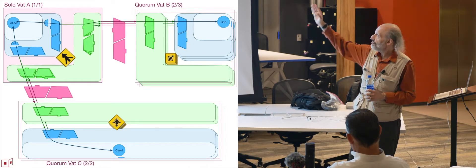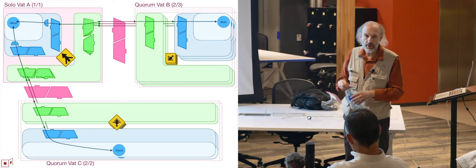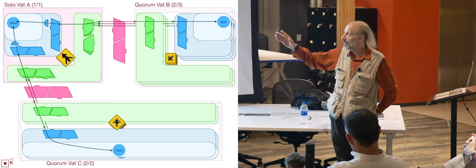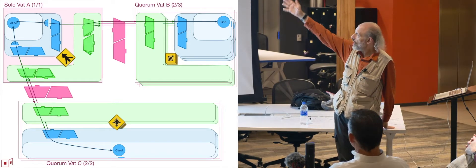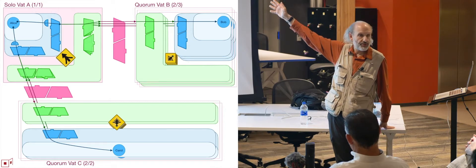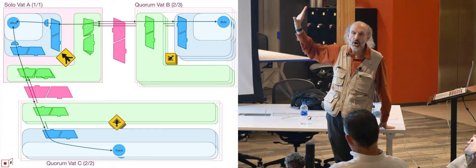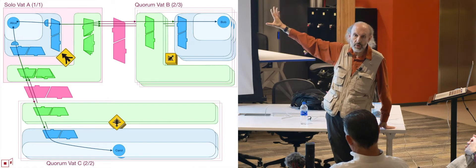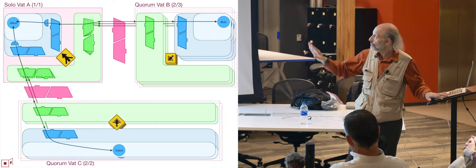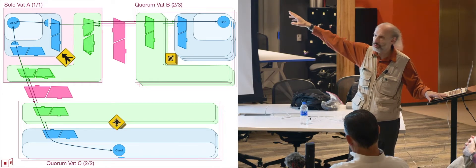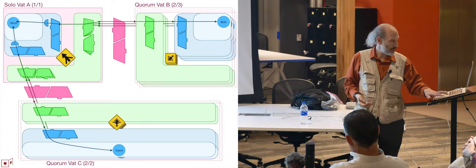At every level of abstraction here there are adapters, and the adapters each have their own tables. The red adapters might be routing tables and network fabric, or a distributed hash table, or similar. We're going to focus on the green adapters, which are cryptographically how one VAT talks to another.